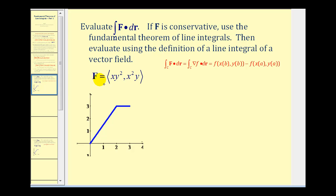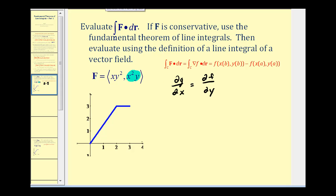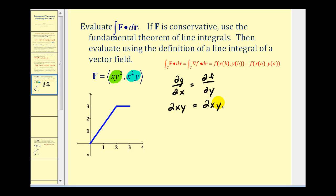We'll start by using the Fundamental Theorem of Line Integrals. First, we'll check to make sure this is a conservative vector field. Since this is a vector field in R2, we have to check to make sure that the partial derivative of g with respect to x is equal to the partial derivative of f with respect to y, where f would be xy squared and g would be x squared y. The partial derivative of g with respect to x would be 2xy, and the partial derivative of f with respect to y would also be 2xy. So this is a conservative vector field.